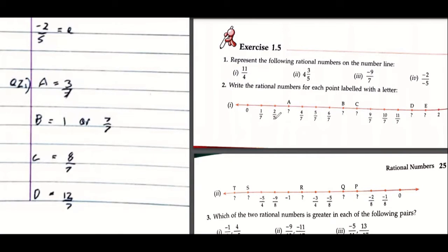One upon seven, two upon seven, so this will be three upon seven, four upon seven, five upon seven, six upon seven. Seven upon seven would be one, so these two are correct.